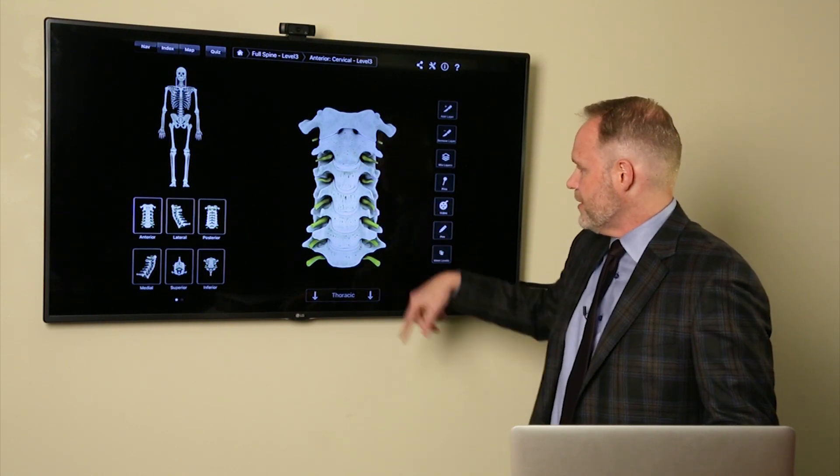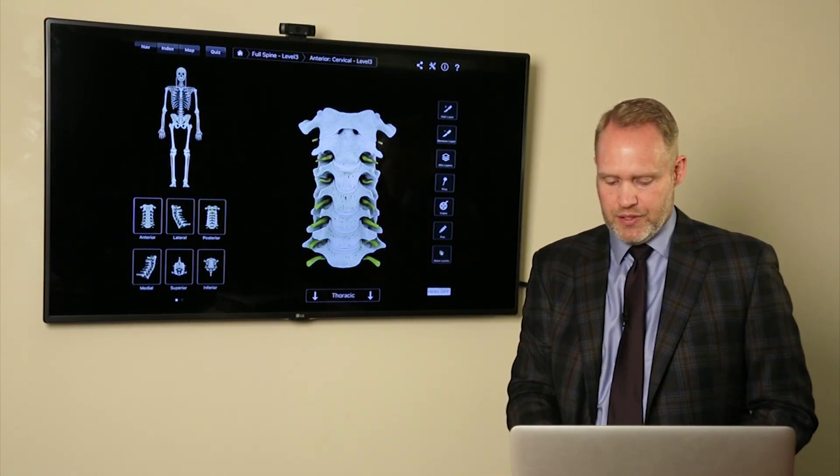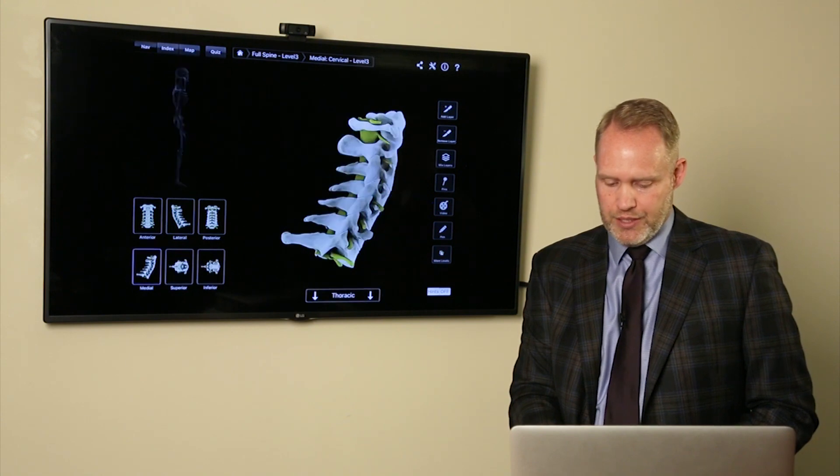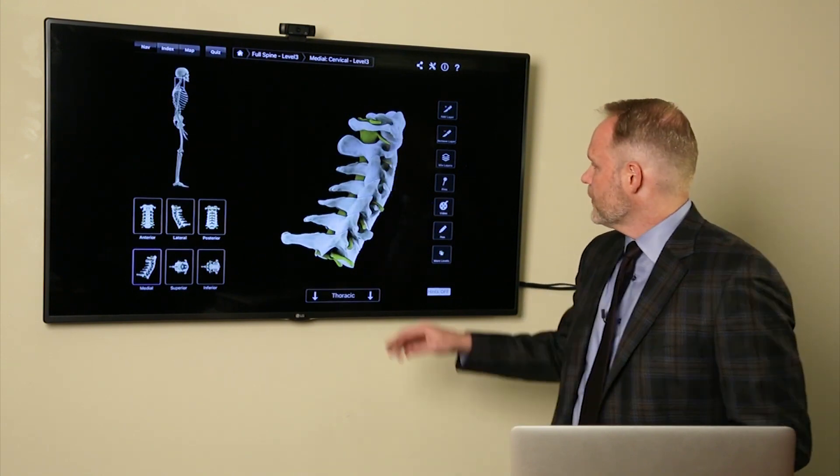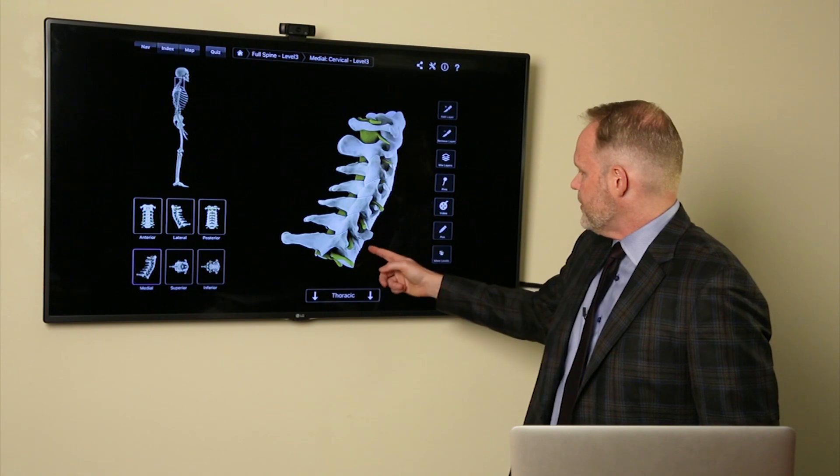And then we have discs inside as well. So we have the nerves and the discs. We can rotate this around. You can see it from the side view. We have the nerves again. We have the discs in between.